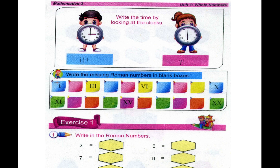Here we have the Roman number missing. Which number is missing here? 2, 3, 4, 5 — next 6, right? Then 7, 8, 9, 10. 11 is right. So here we have 12, then 13, 14, 15, 16, next 17, then 18, then 19 — XI — then XX is 20.